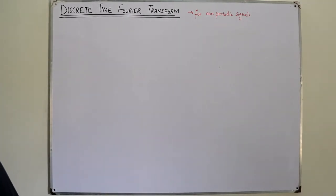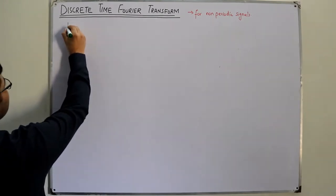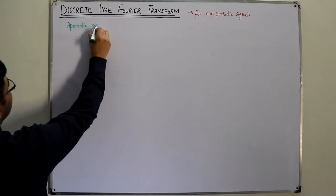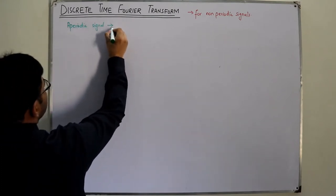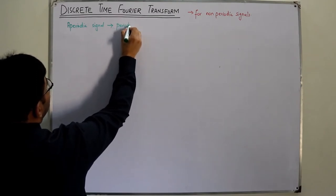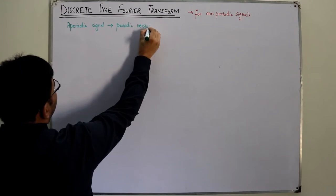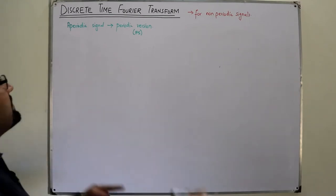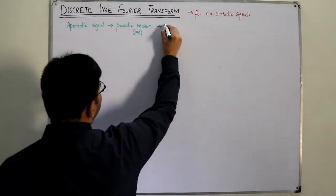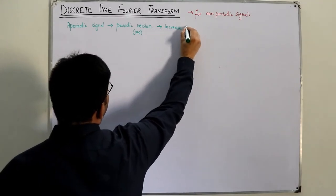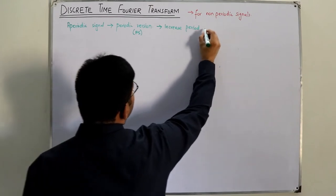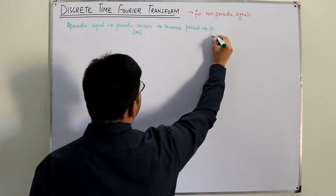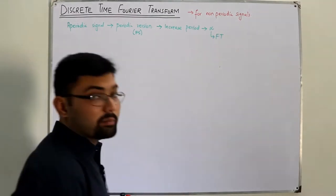So what are the steps? You have an aperiodic signal. You consider its periodic version, which has a Fourier series representation. Then you increase the period, and when the period approaches infinity, the Fourier series representation changes into the Fourier transform.